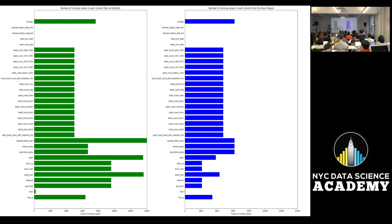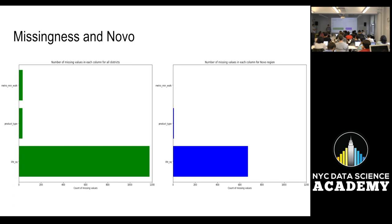Another thing, just missing data. Novo has the majority of the missing data. If you look at this, they're both on the same scale. This is all missing data. And this is just Novo. So, you can see that most of the missing data is in that one area. You'll see later on that there's another reason that kind of helps explain. Missingness in Novo. Again, this just shows that it's still this is all districts. And this is Novo.